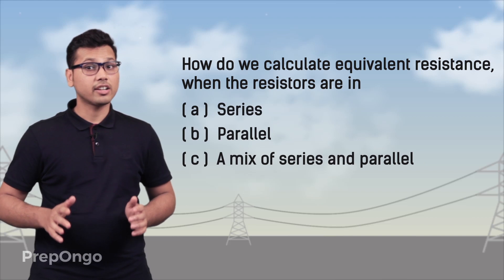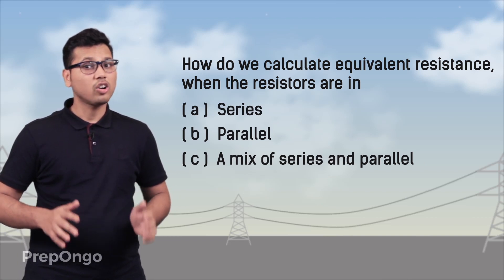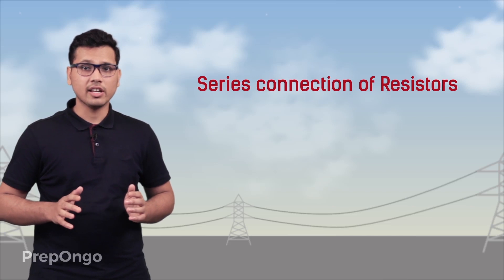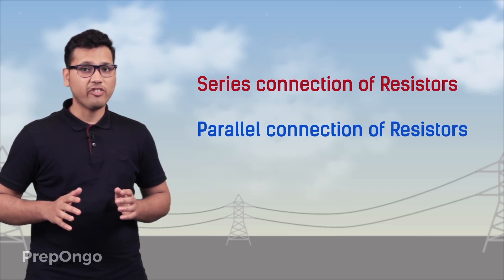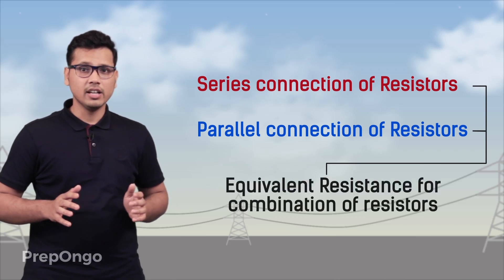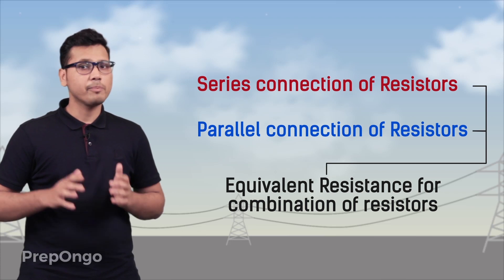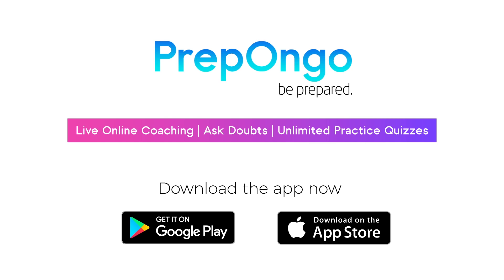Now, what is the equivalent resistance of a circuit when resistors are connected in series, in parallel, or in a combination of both? In our next videos, we'll learn about individual series and parallel connections and how to find the equivalent resistance in each case. Thank you.